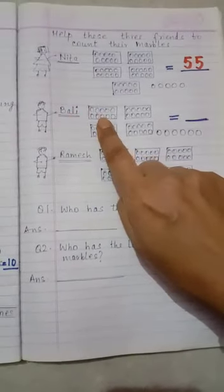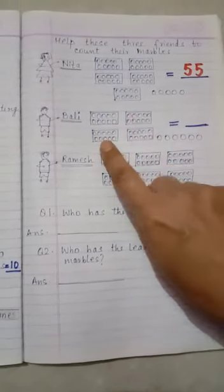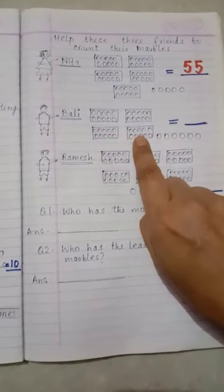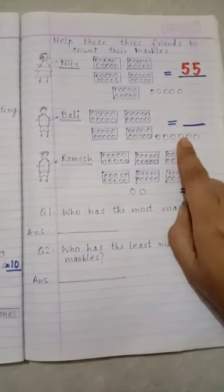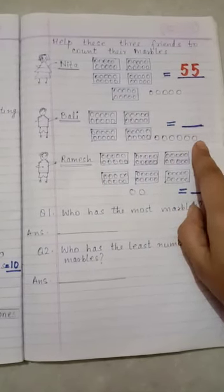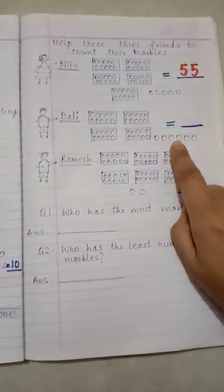Now, Bali. 1 tens, 2 tens, 3 tens, 4 tens. 4 tens means 40. And the loose ones? 1, 2, 3, 4, 5, 6. 4 tens and 6 ones. It is 46.